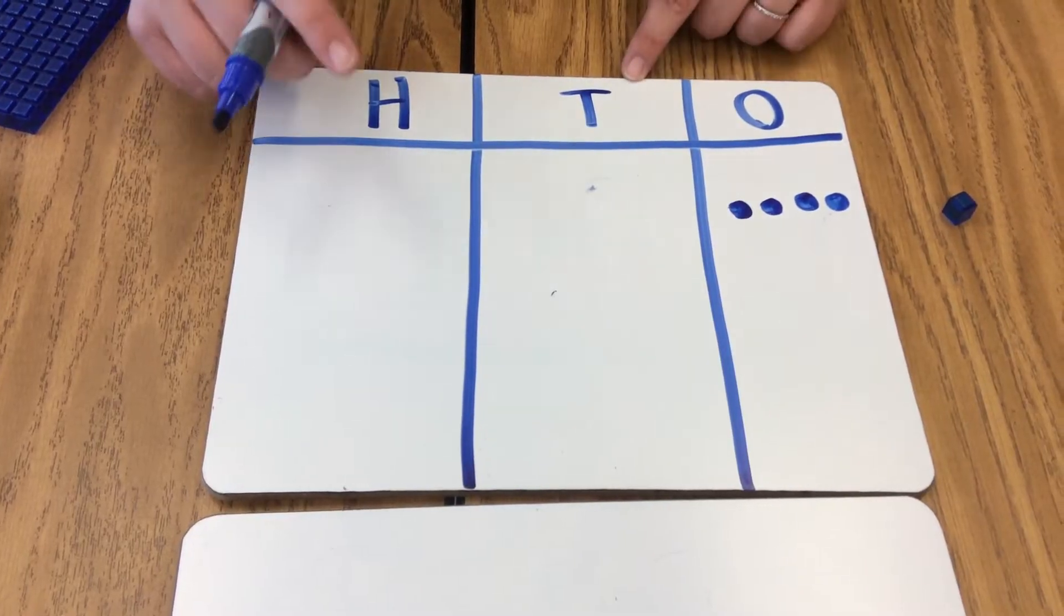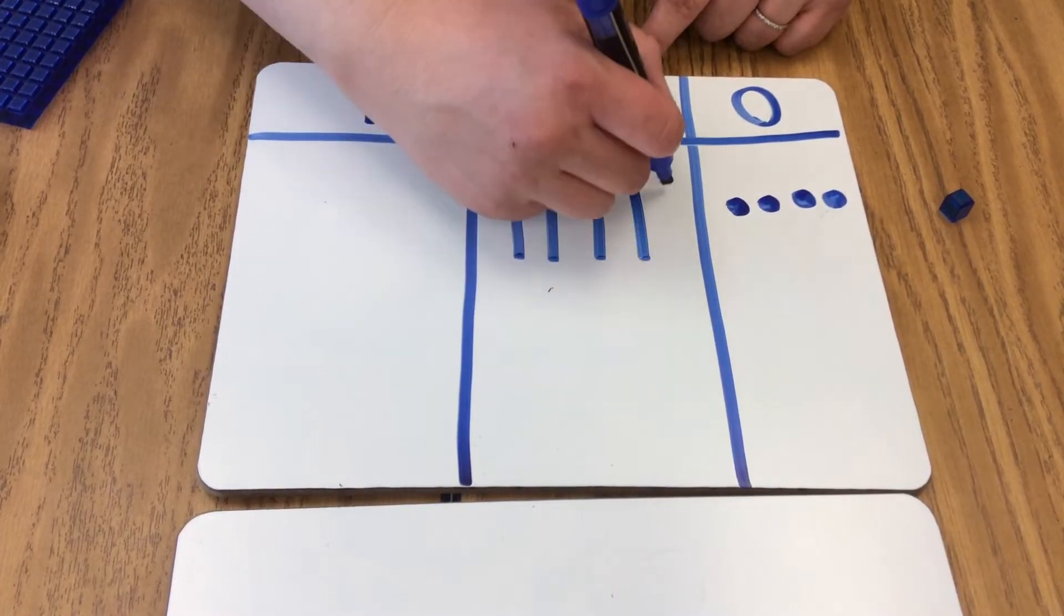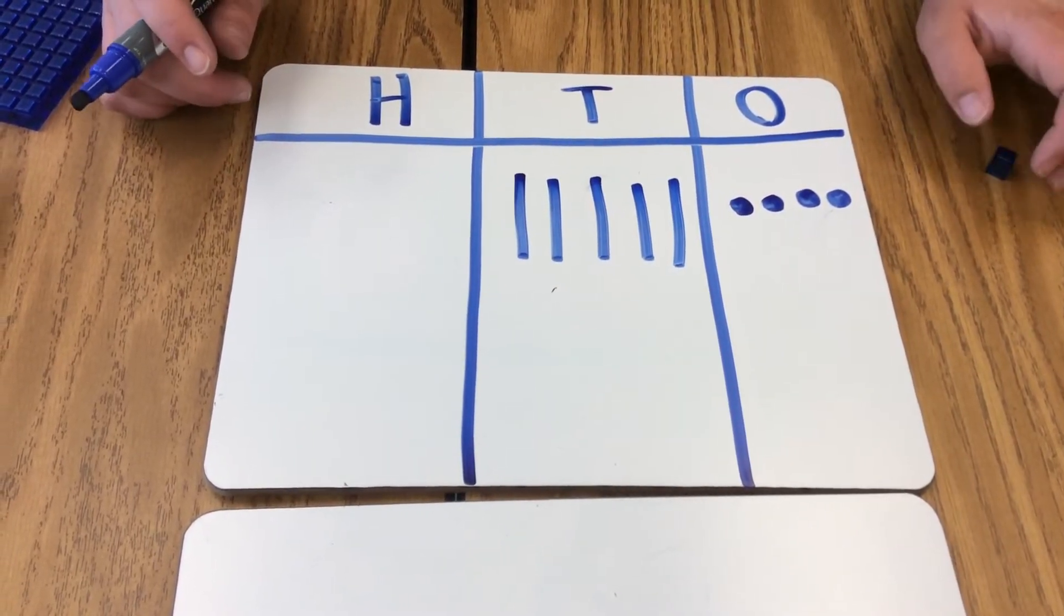Now we're going to move to our tens place, and we're going to draw our five tens. It's important to make sure that the model is nice and neat so we can count clearly.